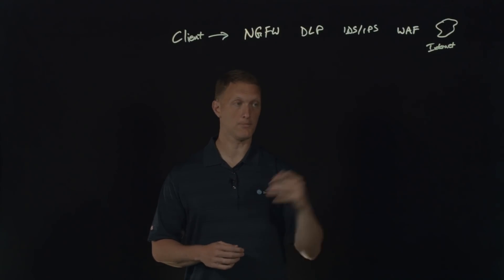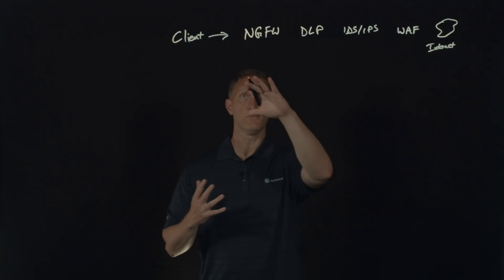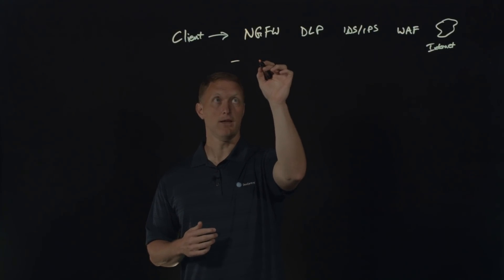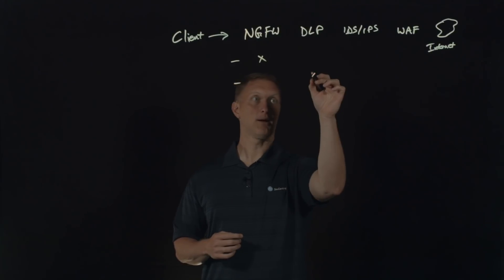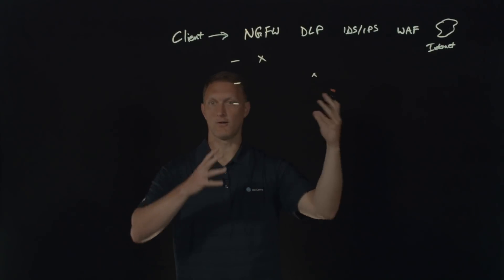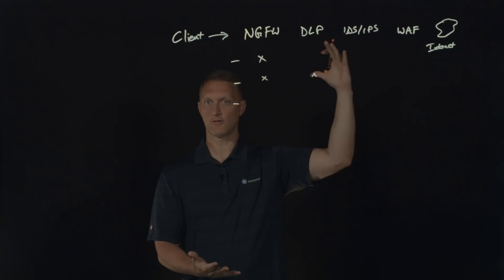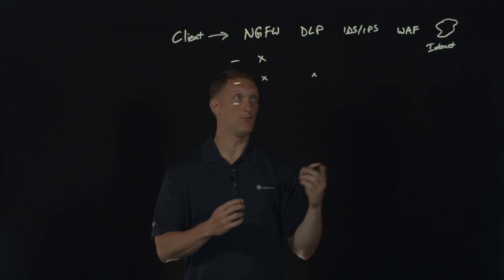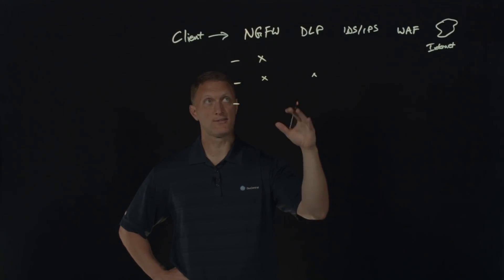Sometimes the workaround is: if one of these breaks and the whole chain goes down, why not create several different chains — several different paths? But then you have to account for scenarios where this box goes down, or that one, or two of them go down simultaneously. You have to build all these different chains to cover all the different possibilities, and you can see the complexity just gets crazy trying to figure out how to route traffic through all your needed security devices.